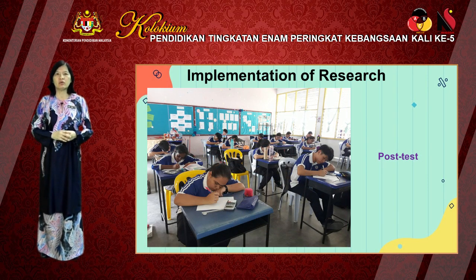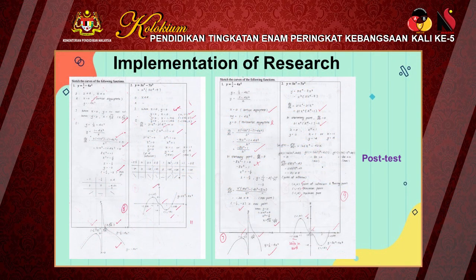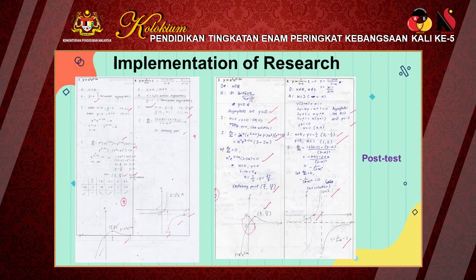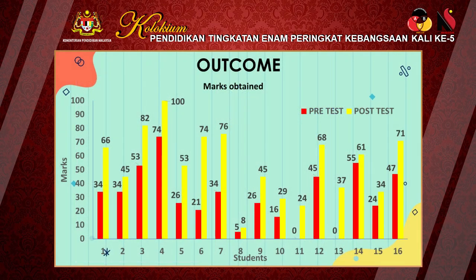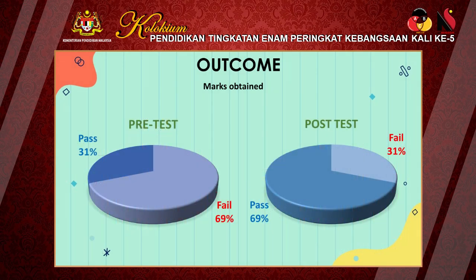Finally, a post-test was carried out using the same questions as in the pre-test. From the answers given, we can see that the students' ability to sketch graphs had improved. As shown in this bar chart of marks from the pre-test and post-test, all the students had improved in their post-test compared to their pre-test — in fact, they had improved tremendously. In this pie chart, for the pre-test only 31% of the students passed, but after the implementation of TASTE with GeoGebra, this improved to 69%, an increase of 38%.